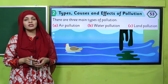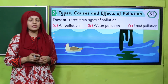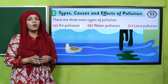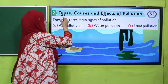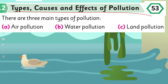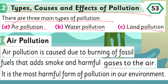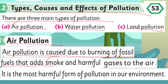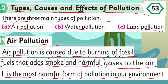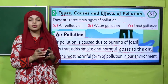Please open page number 53 in your Science 5 books. Now let's start reading: 'Types, Causes and Effects of Pollution. There are three main types of pollution: air pollution, water pollution, and land pollution.' We are going to discuss air pollution today. 'Air pollution is caused due to burning of fossil fuels that adds smoke and harmful gases to the air. It is the most harmful form of pollution in our environment.'